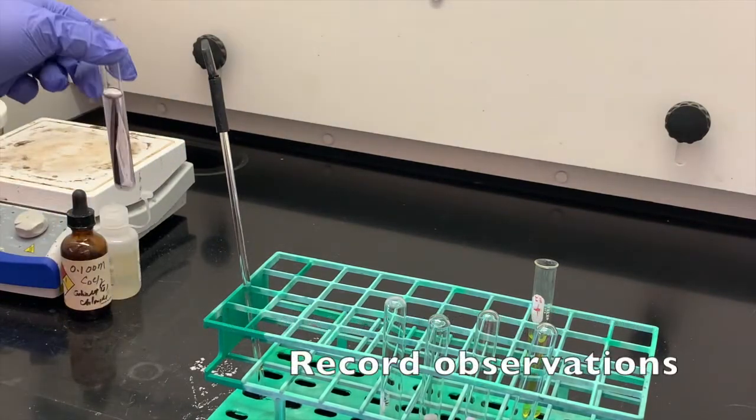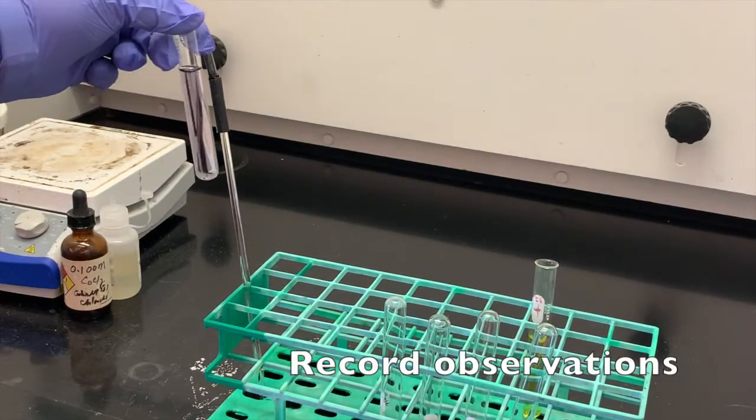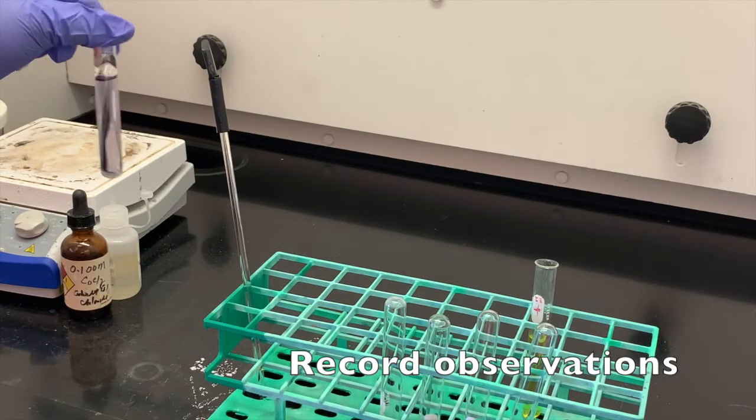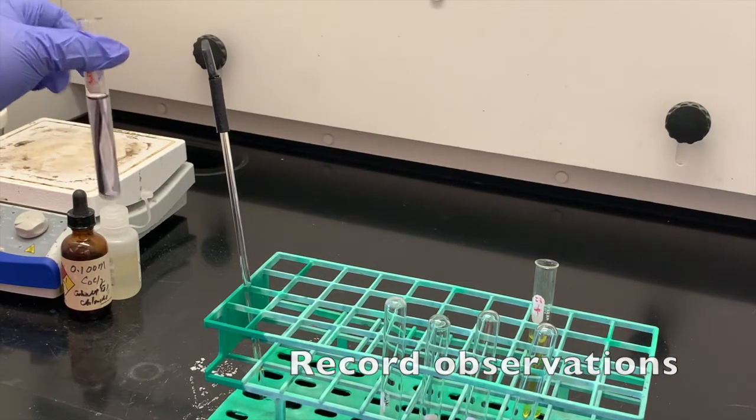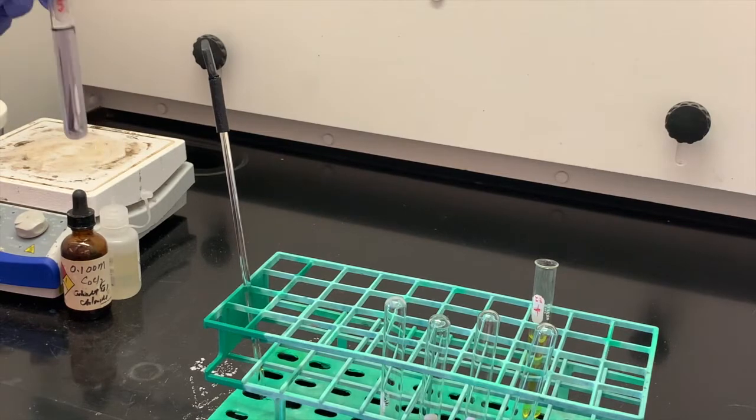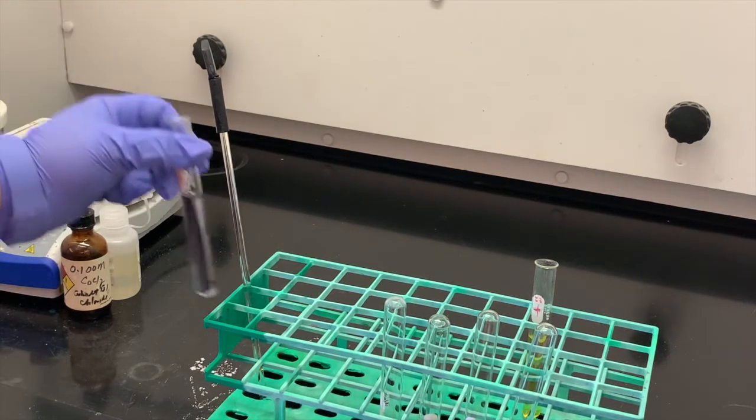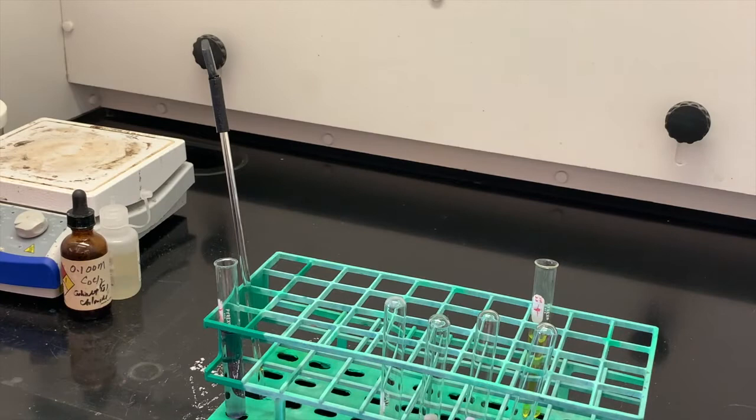Okay, so now we have seen a color change. Make sure you make your observations on what you see in this test tube. So it's gone from a pinkish color and now it is more of a purple color. Hopefully you can see that. Make sure that you record your observations in table one.